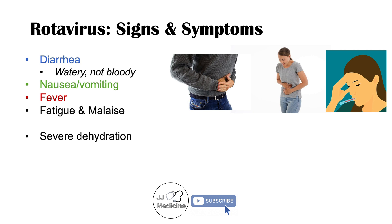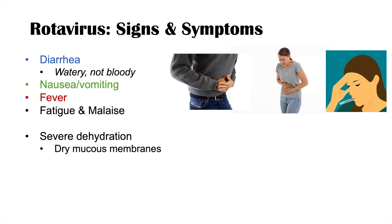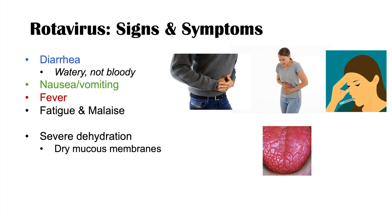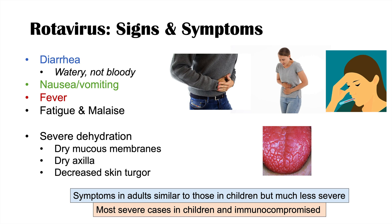Because of the watery diarrhea and nausea and vomiting, we can see severe dehydration. Signs of severe dehydration include dry mucous membranes, dry axilla, and decreased skin turgor. Although rotavirus often affects children, it can affect adults too — but symptoms in adults are similar, just much less severe. Children and immunocompromised individuals have the most severe presentations and the worst cases of rotavirus infection.